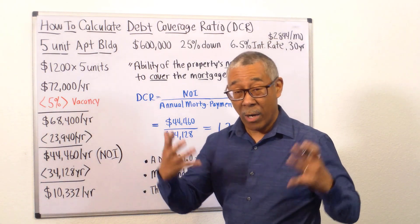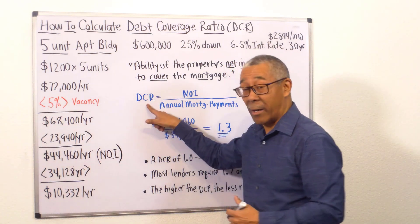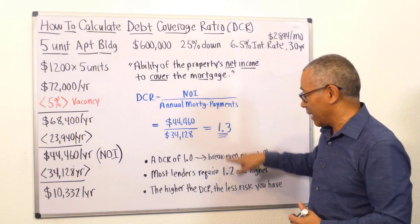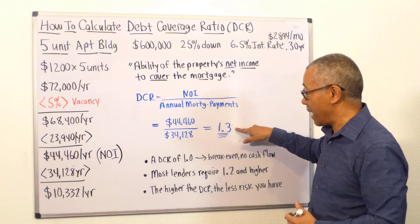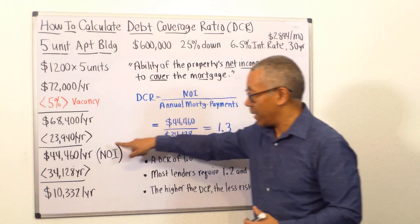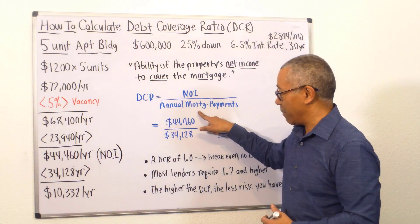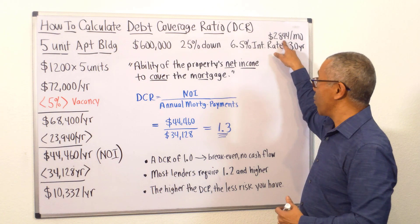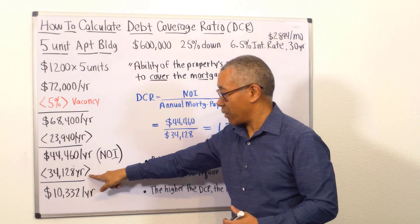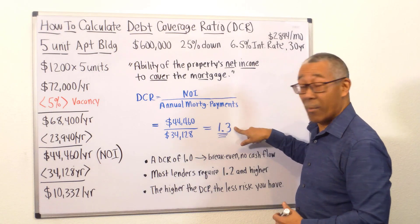When you're running your calculations or evaluating your property, pay attention to DCR. You want a ratio of at least 1.3. In this example it's 1.3 — the NOI divided by the annual mortgage payments. My mortgage payment was $2,844 times 12, which is $34,132, and that equals 1.3.